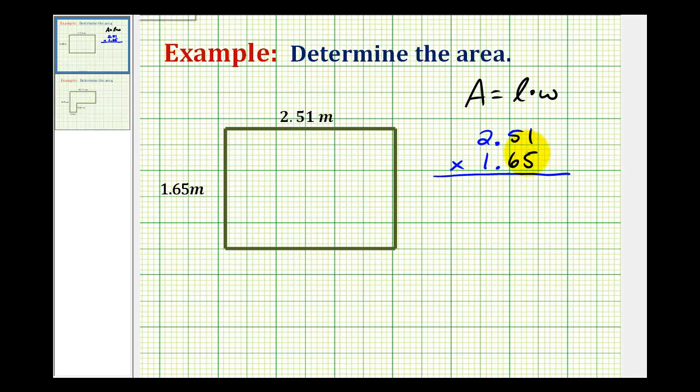When multiplying decimals, we need to keep track of the decimal places. Notice how this first decimal has two decimal places and so does the second one, which means our product must contain the sum or four decimal places. So we're going to multiply like we normally do and then make sure our product has four decimal places to the right of the decimal point.